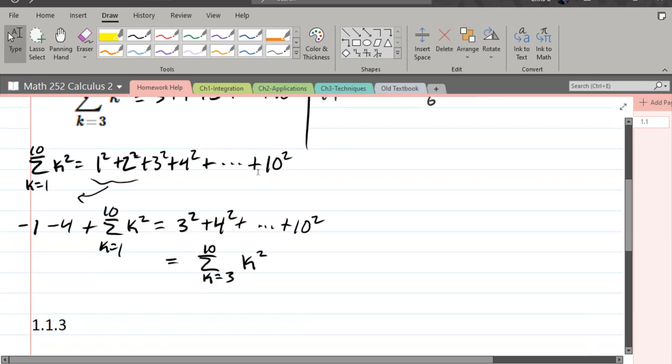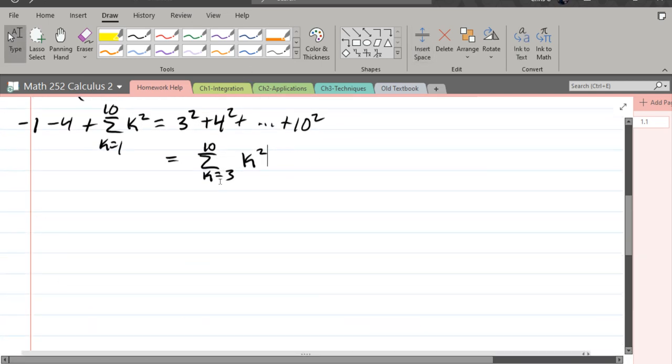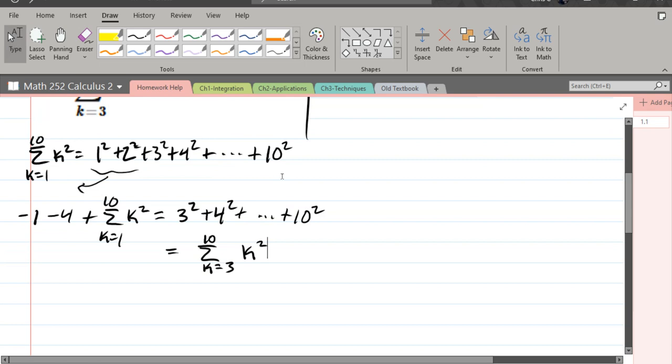So this is called re-indexing. What I did is I pulled out the first couple terms. And what's left, negative 1 minus 4 is negative 5 plus summation k equals 1 to 10 of k squared.